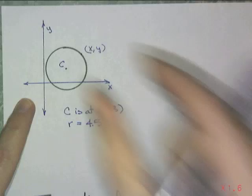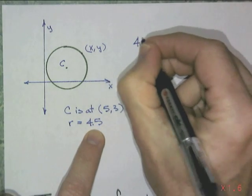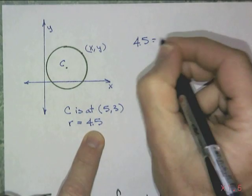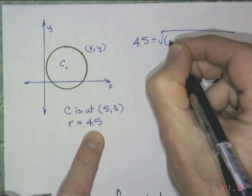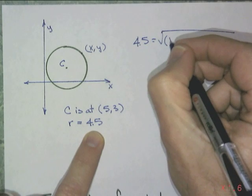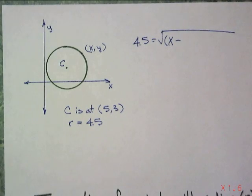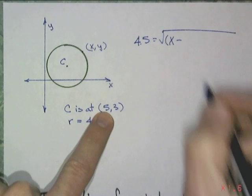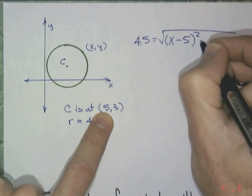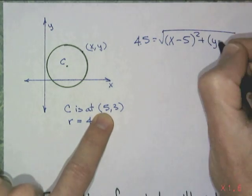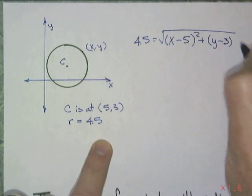They are a set distance. That distance is going to be 4.5. Right? It's equal to the square root of (x minus, what are we equidistant from? The center. x - 5)² + (y - 3)².